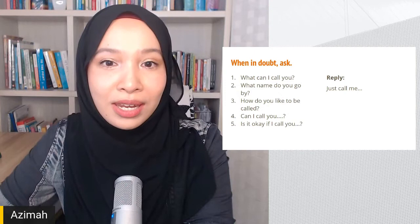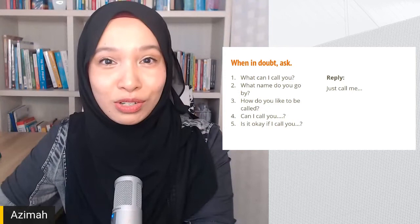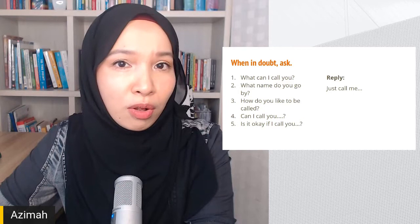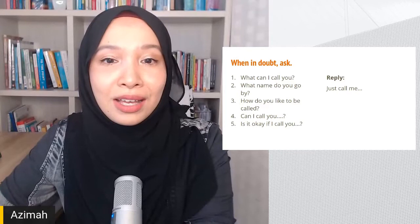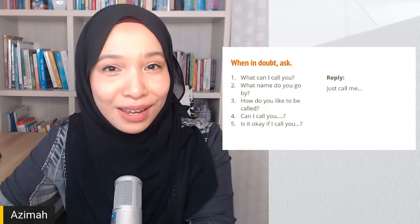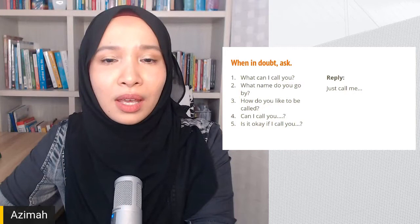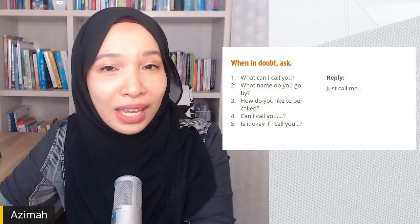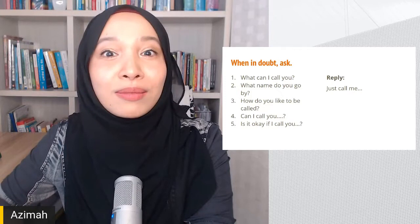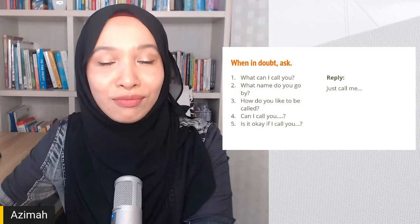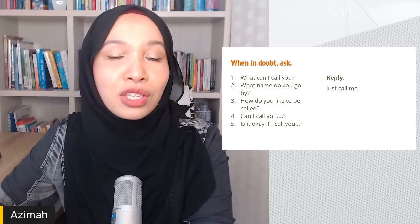When in doubt about how to address someone or what is culturally appropriate, you can ask: 'What can I call you?', 'What name do you go by?', 'How do you like to be called?', 'Can I call you Jennifer?', or 'Is it okay if I call you John?' You don't need to ask if you can observe what people around you call that person, but when in doubt, use these questions.